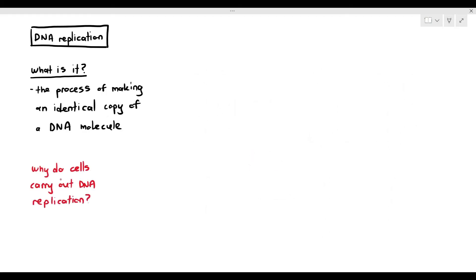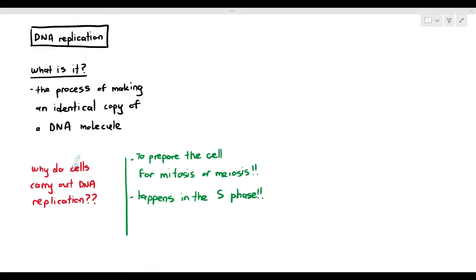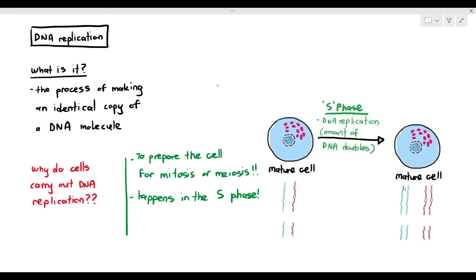Why do cells actually carry out DNA replication? It is a preparation to prepare the cell for mitosis or meiosis. It happens during the S phase, where the cell has to double its amount of DNA, so that it's able to undergo cell division — whether mitosis or meiosis. Before it undergoes the nuclear division, the amount of DNA has to double through a process known as DNA replication.